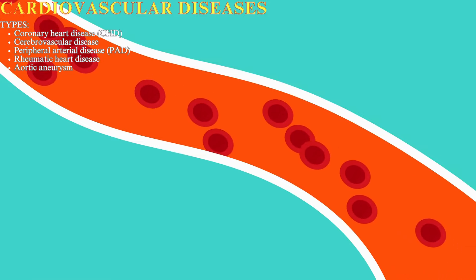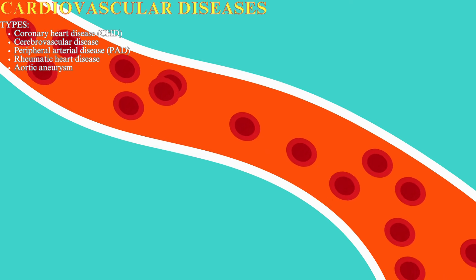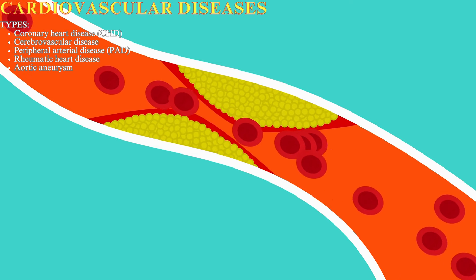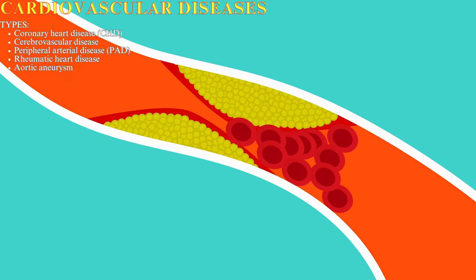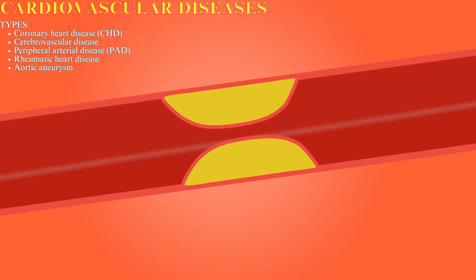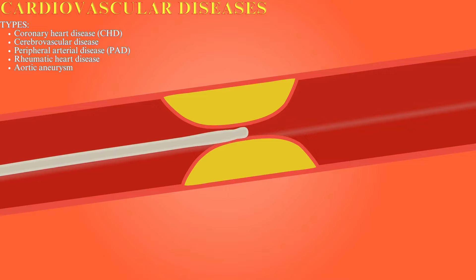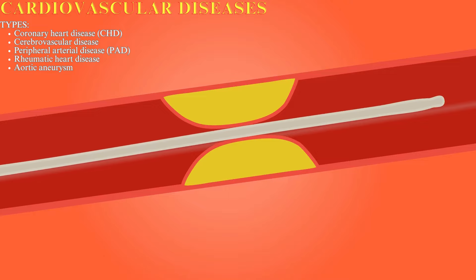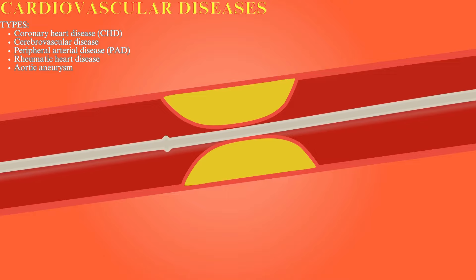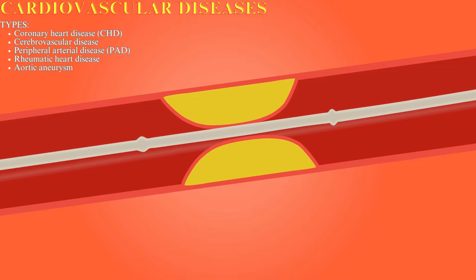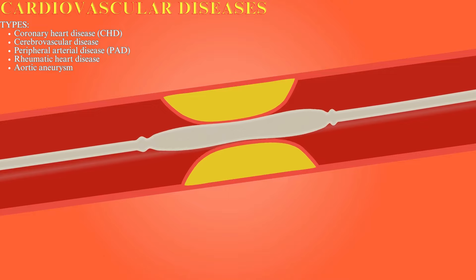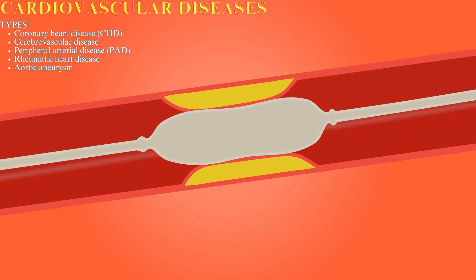There are several different types of CVDs, but they all share a common theme: damage to the heart and blood vessels. Here are some of the most common types. Coronary heart disease, or CHD, is the most common type of CVD. It is caused by a buildup of plaque in the arteries that supply blood to the heart.